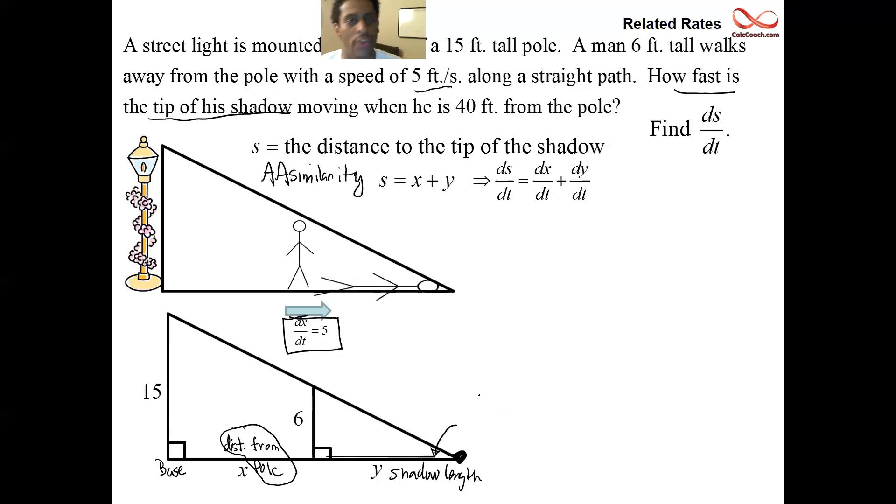The sides should be in proportion to each other. And so we're going to do that by saying that the 15 in the big triangle is one leg and X plus Y in the big triangle is the other leg. The ratio of these legs in the big triangle should be equal to the ratio of the legs in the smaller triangle. And so we go to the smaller triangle. We have 6 to go with the 15, and we have Y to go with the X plus Y. So 6 up top, Y at the bottom. And this will help us get the relationship between X and Y.